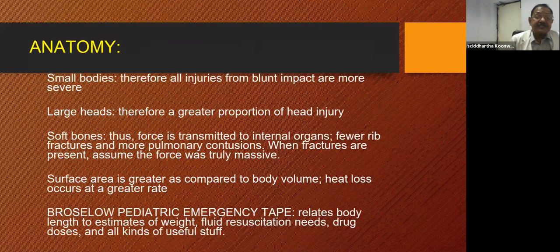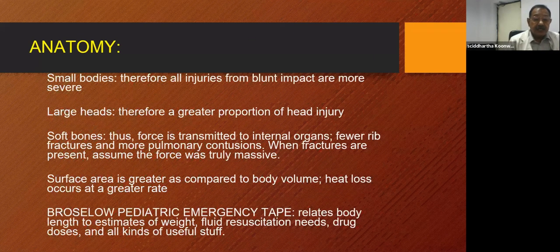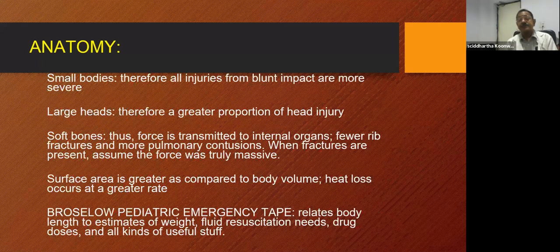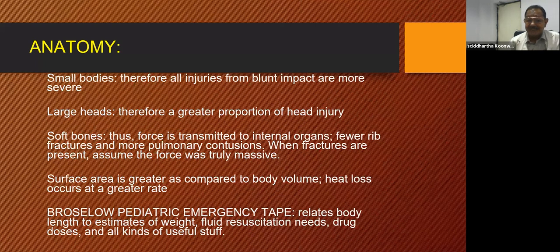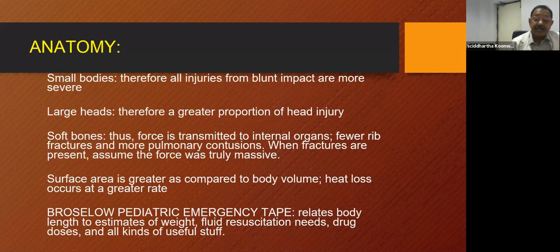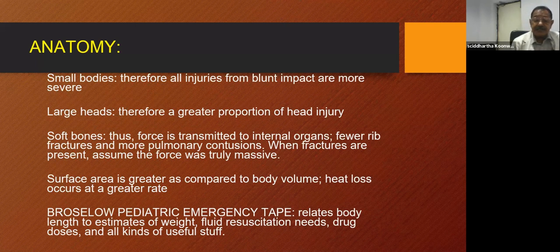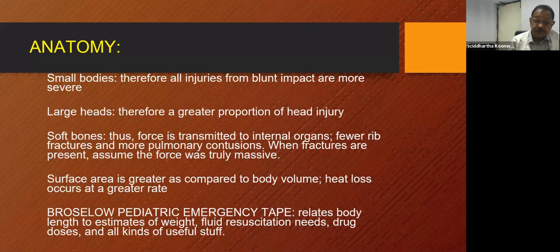In anatomy, because children have smaller bodies, all injuries from blunt impact are more severely distributed to all body parts. Large heads account for a greater proportion of head injuries. Softer tissues mean force is transmitted to internal organs, with fewer fractures and more pulmonary contusions. When fractures are present in blunt trauma, assume the force was truly massive. Surface area is greater relative to body volume, so heat loss occurs at a greater rate. The Broselow Pediatric Emergency Tape is a useful tool relating body length to estimates of weight, fluid resuscitation needs, and drug doses.